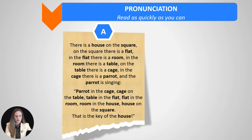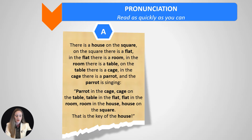There is a house on the square. On the square there is a flat. In the flat there is a room. In the room there is a table. On the table there is a cage. In the cage there is a parrot and the parrot is singing. Parrot in the cage, cage on the table, table in the flat, flat in the room, room in the house, house on the square — that is the key of the house.